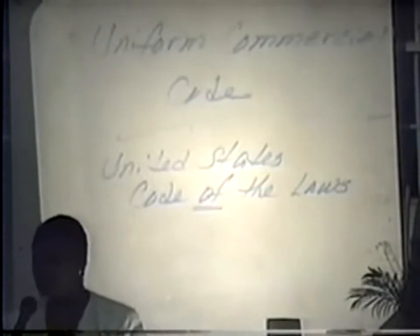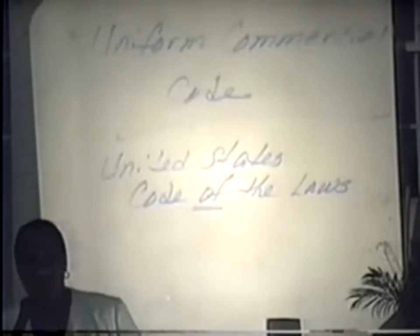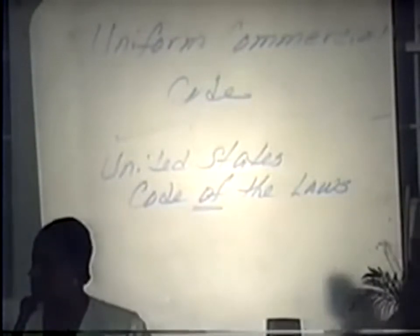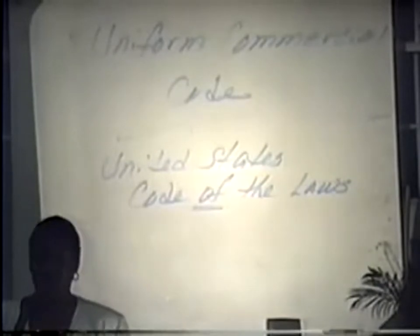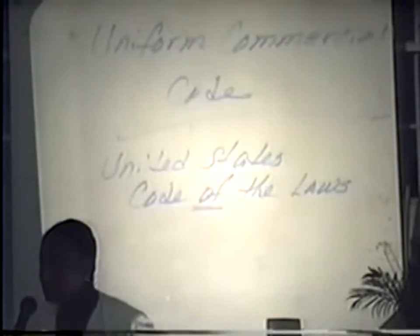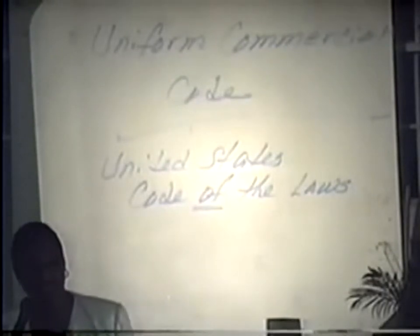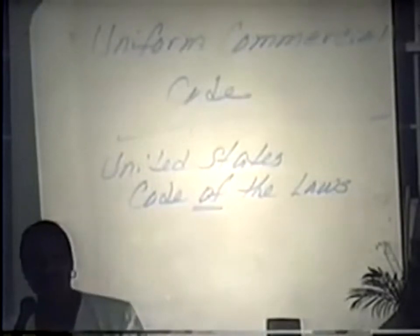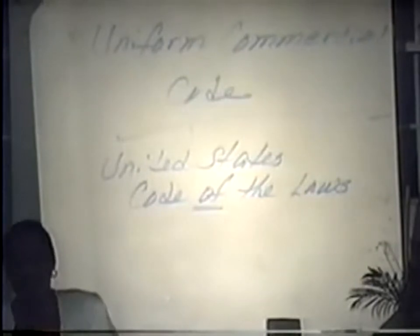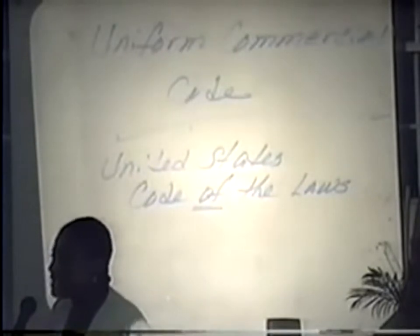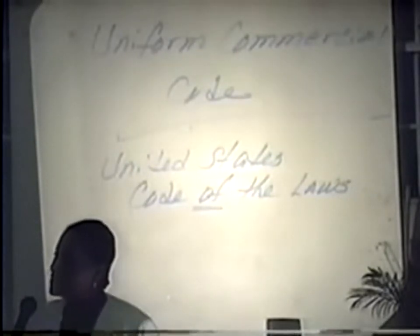The United States Code of the Laws is the code used by all of the United States District Courts in Federal Court. If you go into Federal Court, you must cite the United States Code that applies to the violations made against you. When I go to court, they put everybody out the courtroom and post officers at the door on the inside and outside because they don't want people to hear what I have to say.